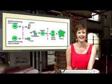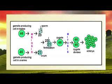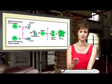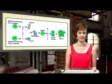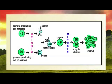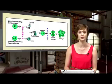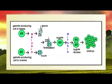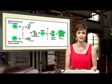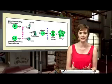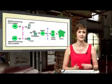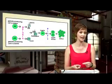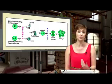Let's look at this diagram that shows us why gametogenesis is so important. We have a gamete-producing cell in the testes and underneath it a gamete-producing cell in the ovaries. Both have 46 chromosomes, which means they are diploid. They undergo meiosis to produce either a sperm cell or an ovum, which is haploid — only 23 chromosomes. That sperm cell and egg cell will fertilize to create a zygote, the beginning of a new life. The zygote undergoes mitosis and gets bigger and bigger until we have a baby. We want that baby to be diploid with 46 chromosomes, which is why our gametes need to be haploid.